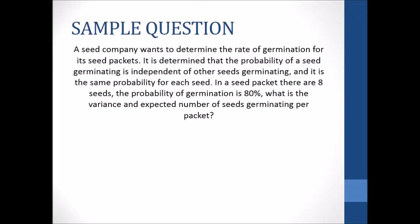So let's look at a sample question now. A seed company wants to determine the rate of germination for its seed packets. It has determined that the probability of a seed germinating is independent of other seeds germinating, and it is the same probability for each seed. In a seed packet, there are eight seeds. The probability of germination is 80%. What is the variance and expected number of seeds germinating per packet?